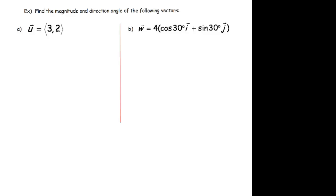In a previous video we found the component form of a vector when we were given its magnitude and direction. Here we're going to do the reverse. We need to find the magnitude and the direction angle given the component form.